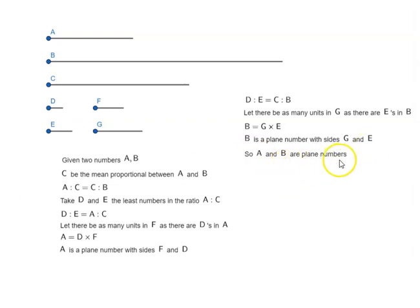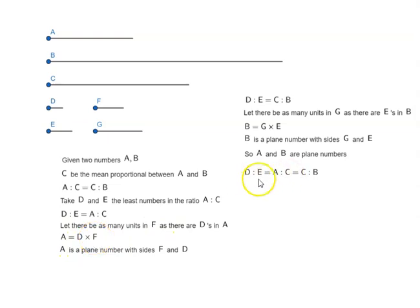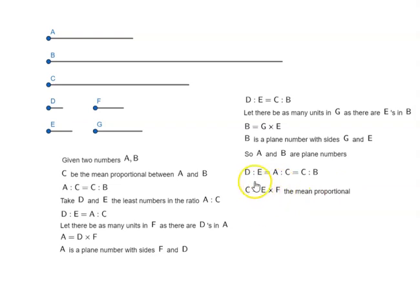A and B both are plane numbers and we know D is to E equal to A is to C equal to C is to B. Now here we know D measures A according to the units in F, and because of this proportionality, we can say E measures C according to the units in F. Which means C is equal to E times F, the mean proportion. Since D is to E equal to A is to C and D measures A based on the units in F, because of this proportionality, we can also say E measures C based on the units in F.